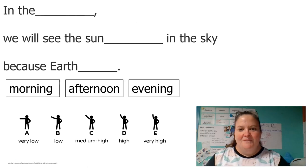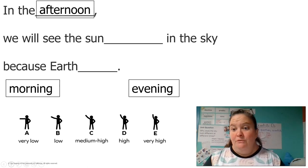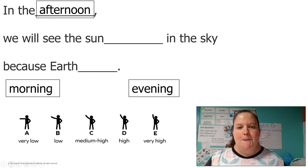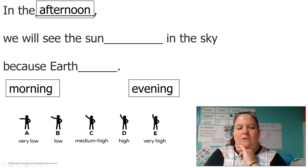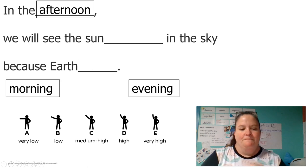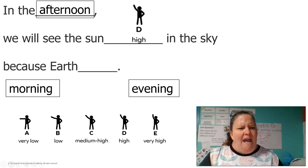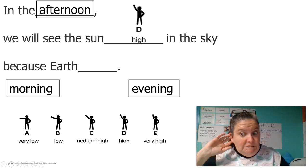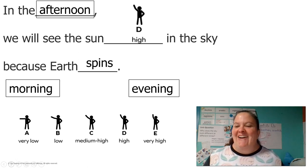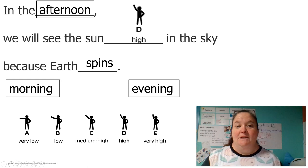Let's do the afternoon next. In the afternoon, we will see the sun where — very low, low, medium high, high, or very high? The afternoon, that was after lunch. I said high. You might have said very high and that would be okay too. Let's read it all together: "In the afternoon, we will see the sun high in the sky because Earth spins."